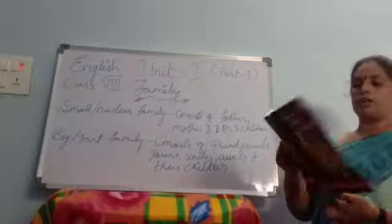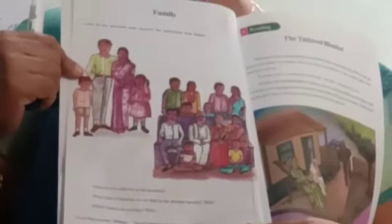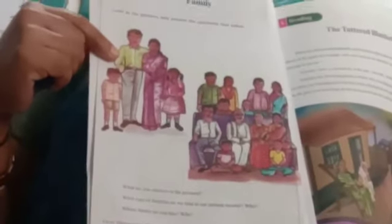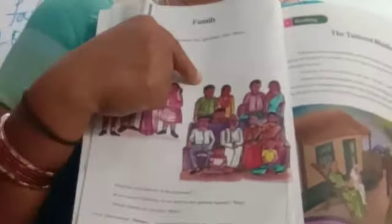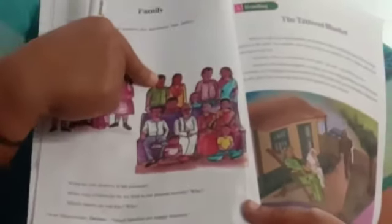Now I would like to show you the face sheet. Here the pictorial description shows two families. The first picture is related with a small or nuclear family, whereas the second picture is related with a joint or big family — you can see more people including grandparents, parents, uncles, and aunts along with their children.